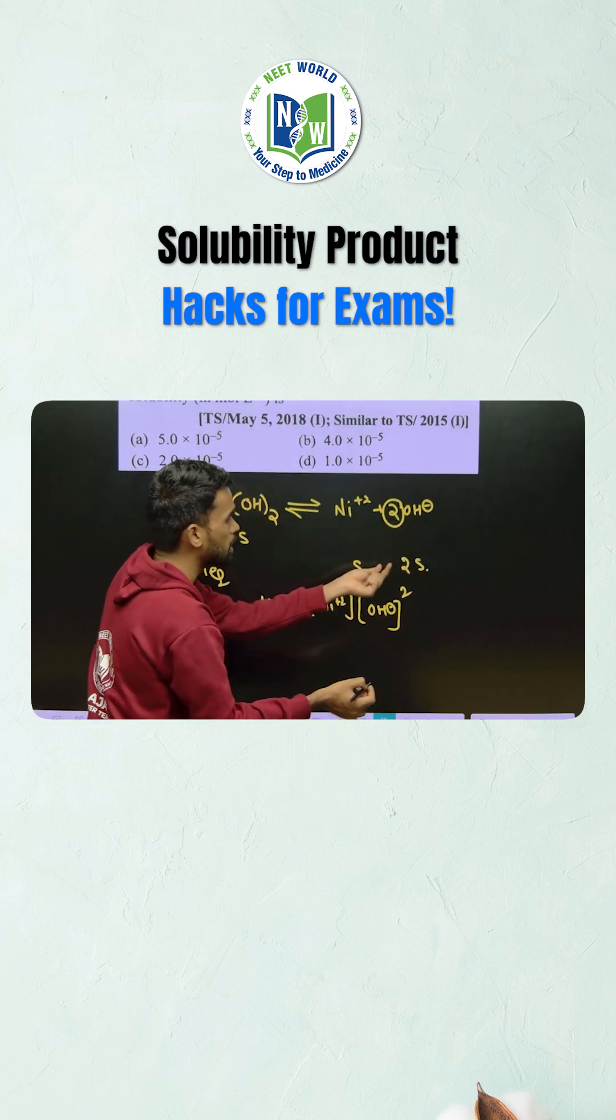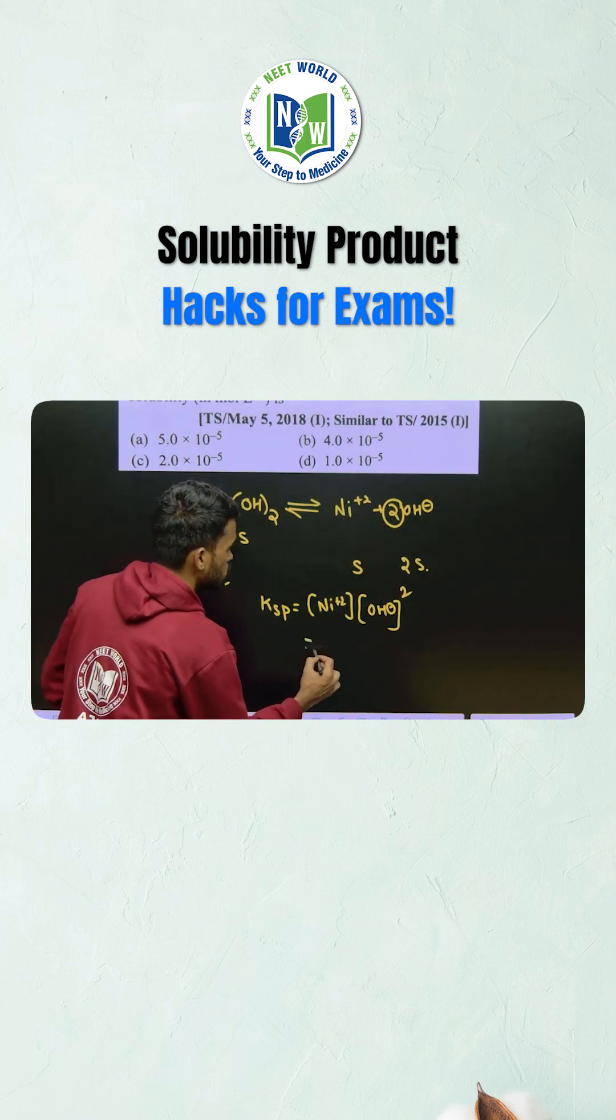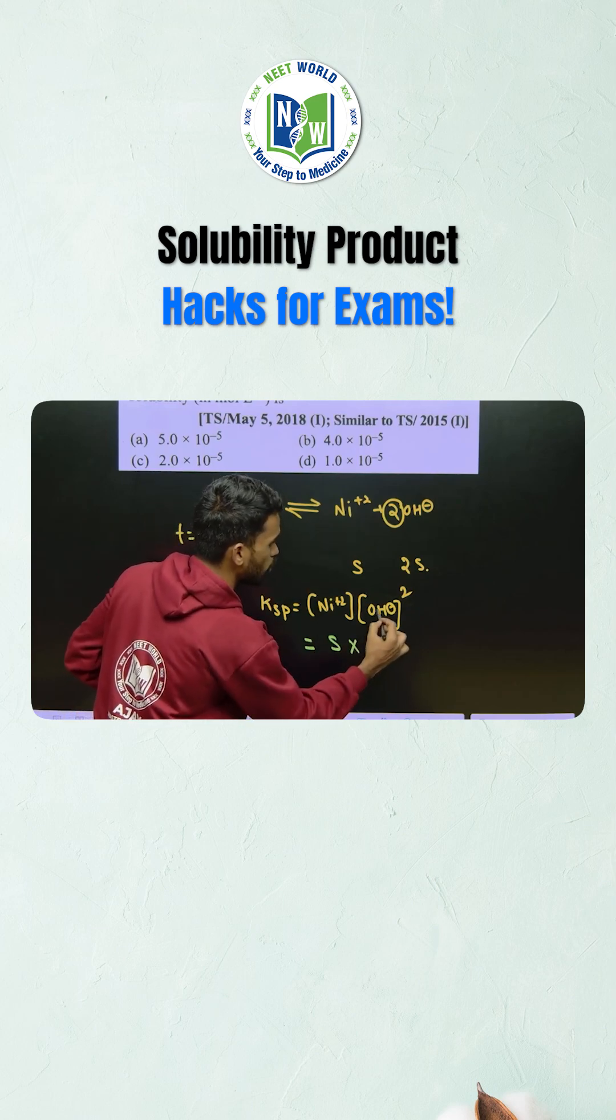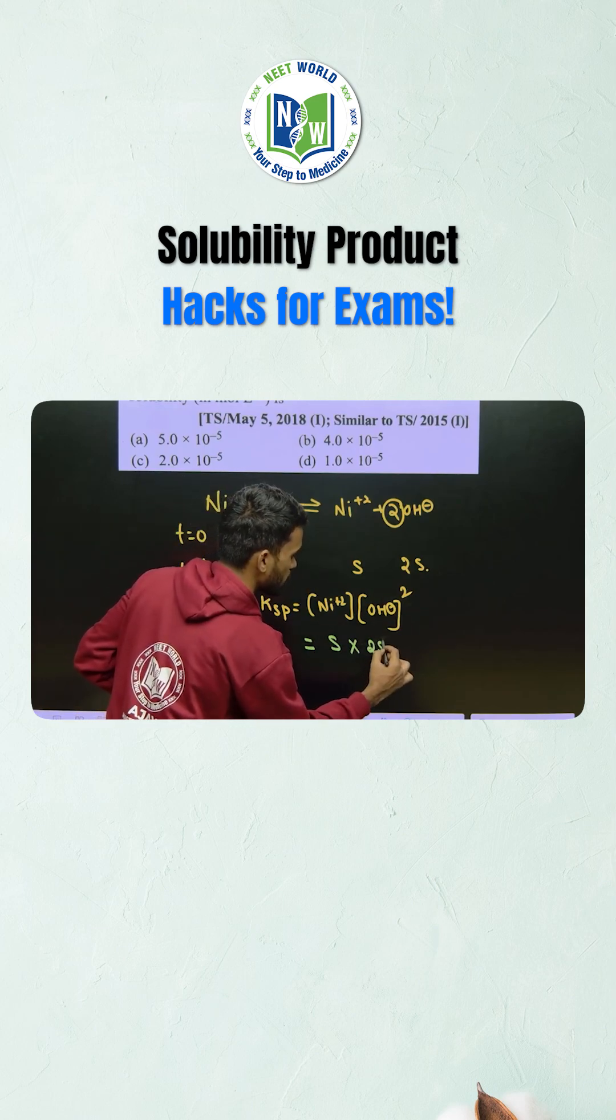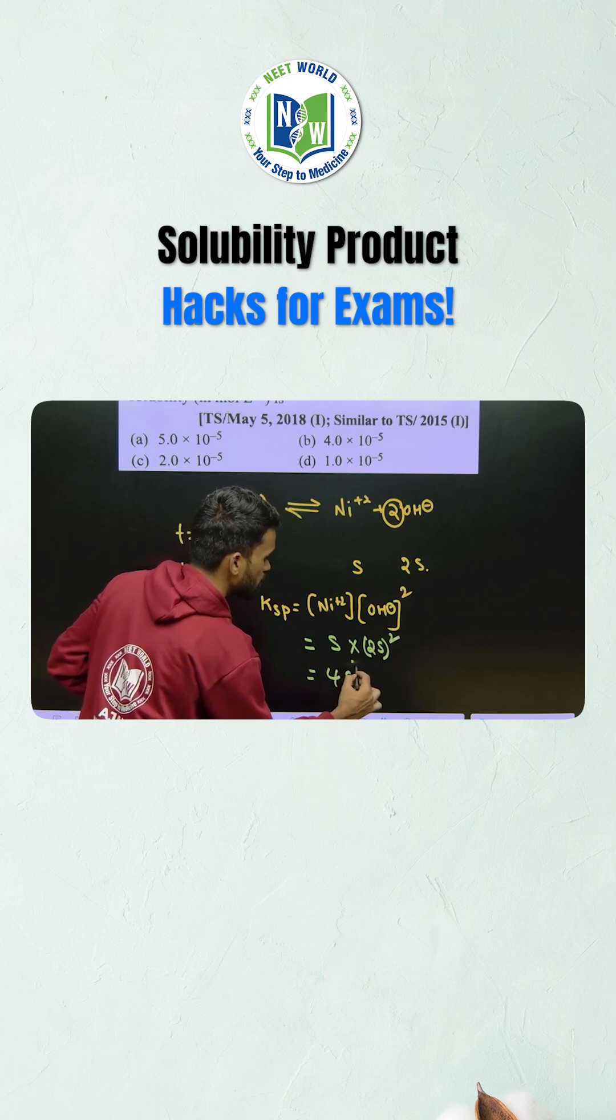So substitute the solubilities here. For Ni plus 2 we have S and for OH minus we have 2S to the power 2. So it becomes 4S cube.